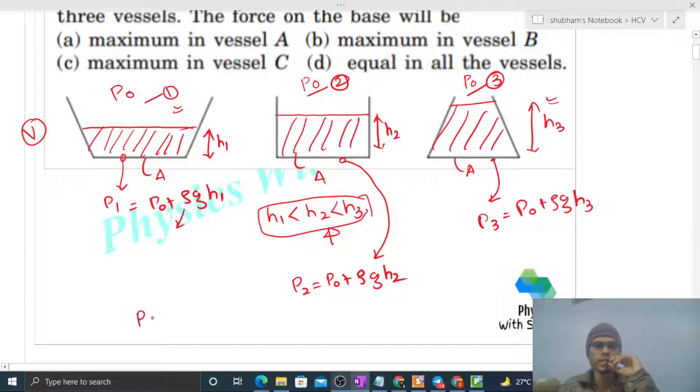Now you can see the relation that p1 will be less than p2 will be less than p3, because of the height relation.